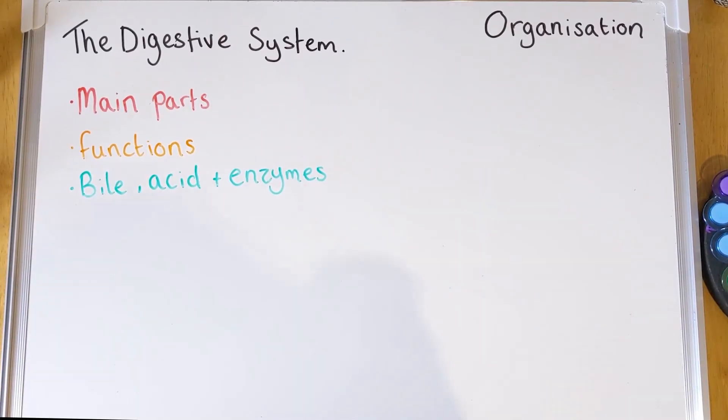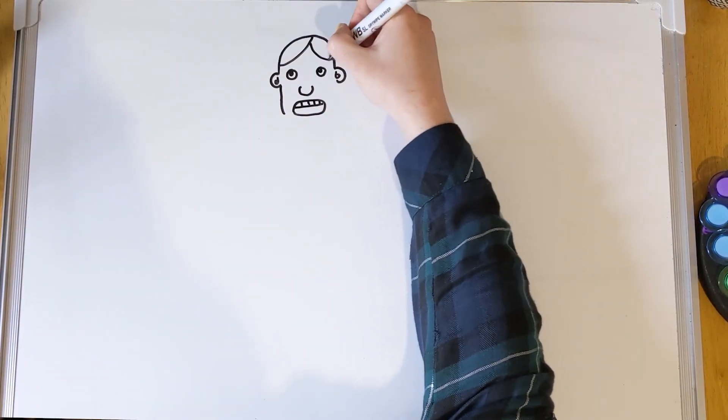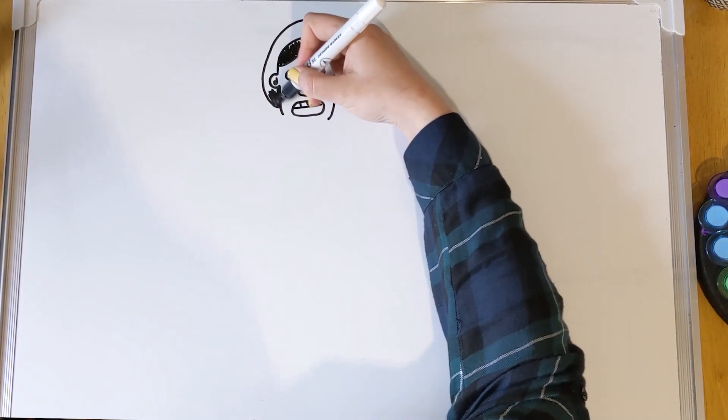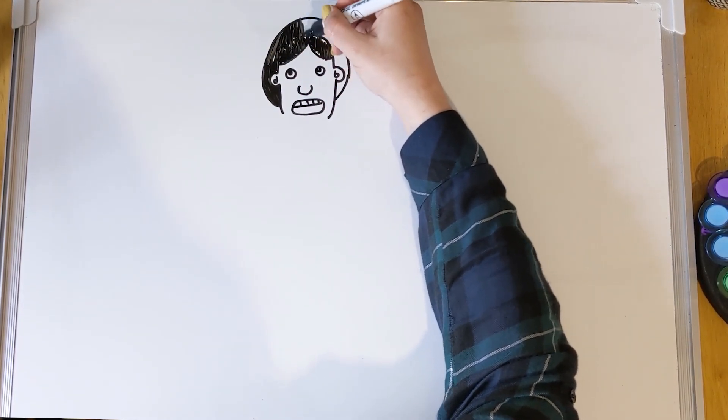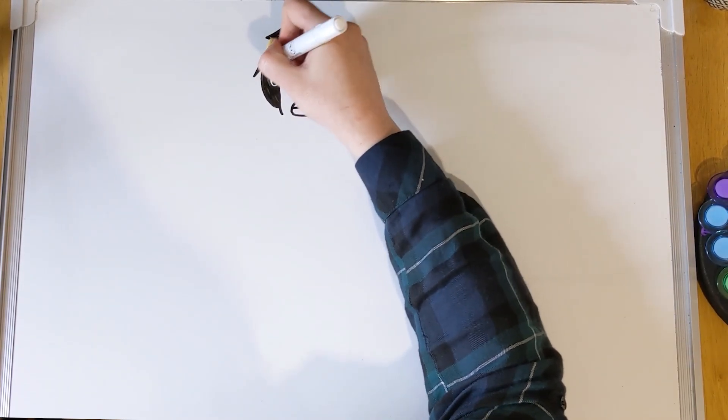As always, grab some paper, grab some pens, and follow along with me. Let's start off by looking at the digestive system as a whole. There are many parts that you need to know and be able to label in an exam. The salivary gland produces saliva, helps you to swallow food. It also produces one of these enzymes that we'll be talking about in a minute that helps break down things like carbohydrates into sugar.